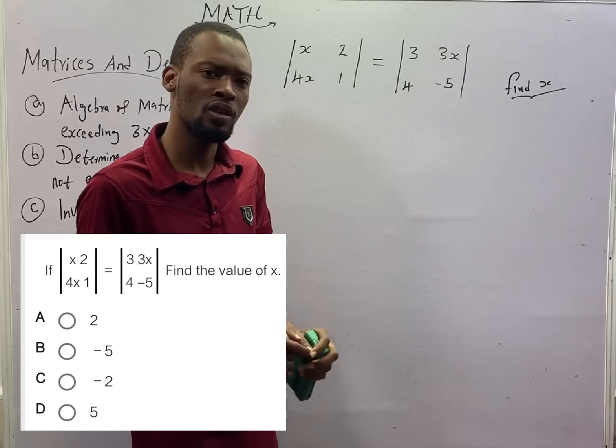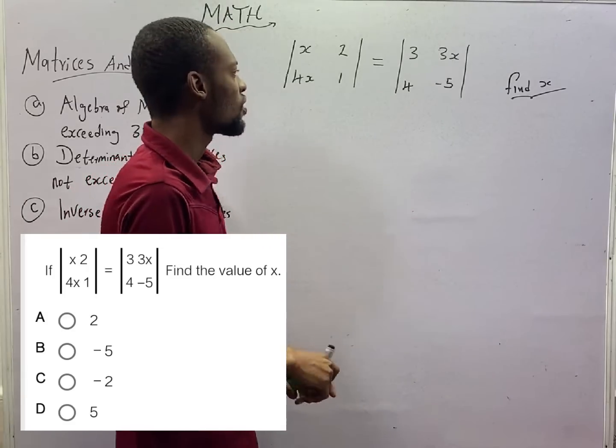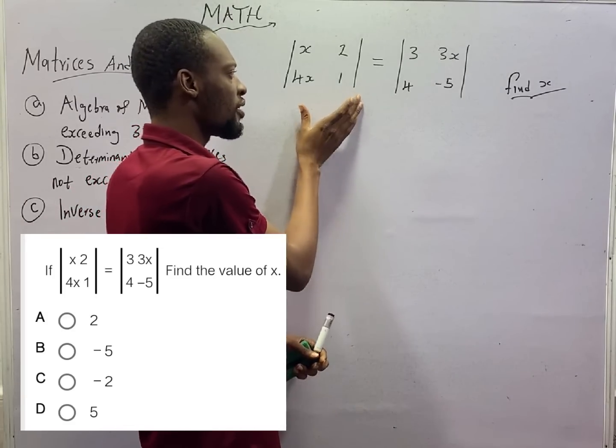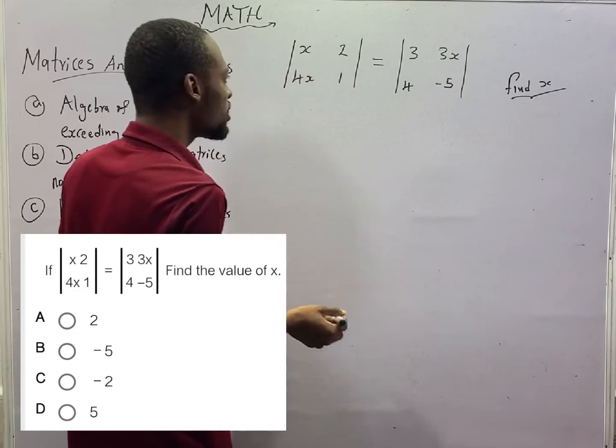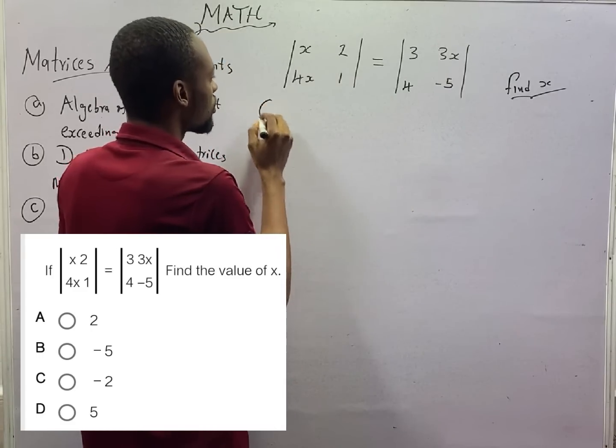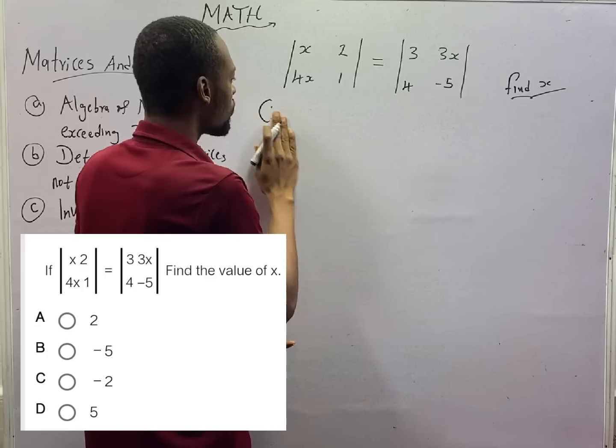So, this is a 2 by 2 matrix. This is a 2 by 2 matrix. The determinant of this guy will definitely be S times 1 or 1 times S minus 4S times 2.